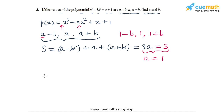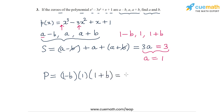Now let's make use of the relationship for the product of zeros. The product from the zeros themselves should be equal to (1-b) × 1 × (1+b), which equals 1 - b². From the coefficients, the product of zeros should be minus of the constant term divided by the coefficient of x³, so minus of 1 over 1, which is -1.